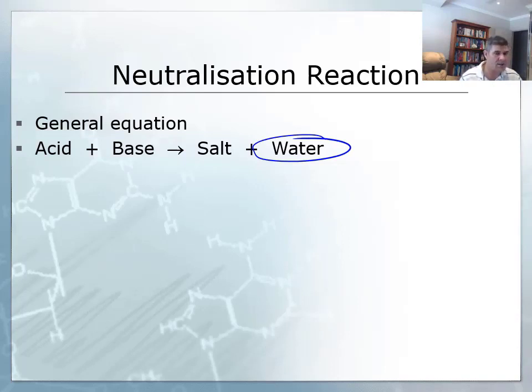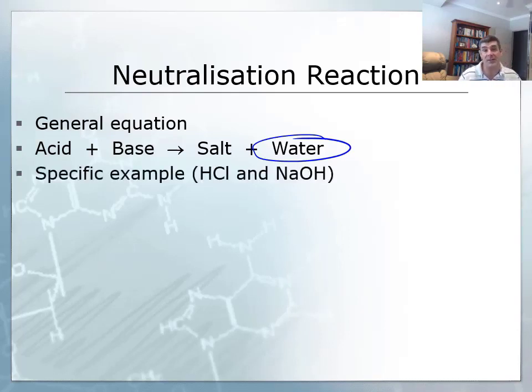Now, the final solution may not always be neutral pH, but there's reasons why that might be the case, and we'll look at that later on. So let's have a look at a specific example, such as hydrochloric acid and sodium hydroxide.